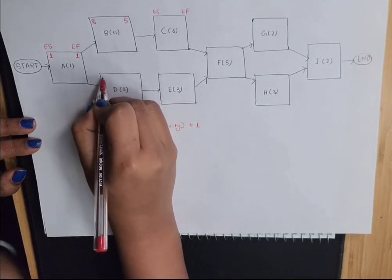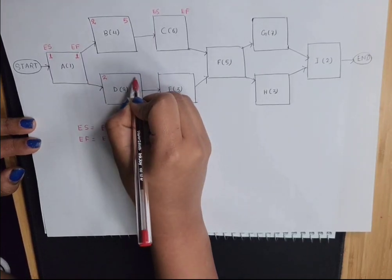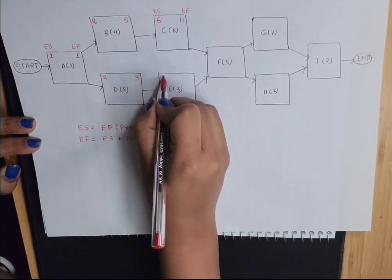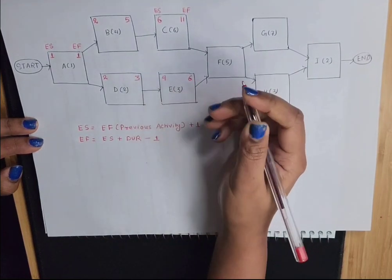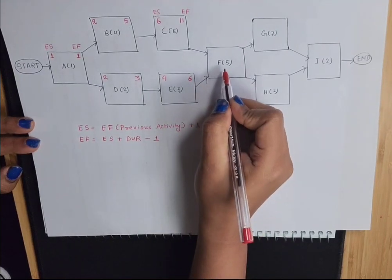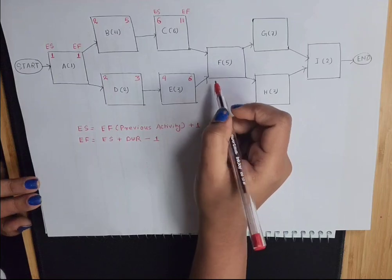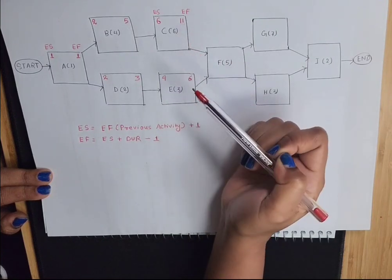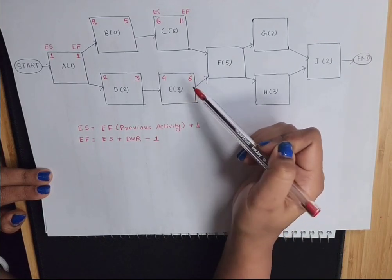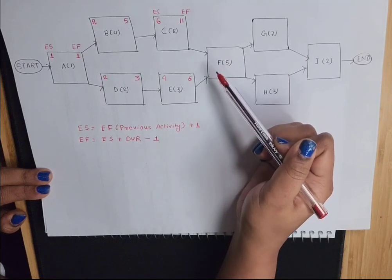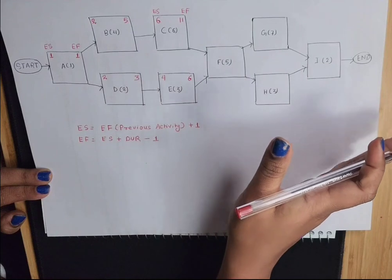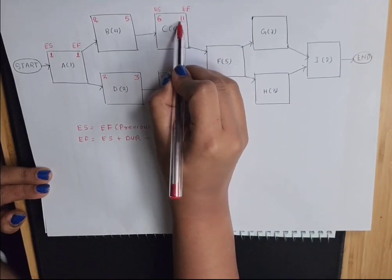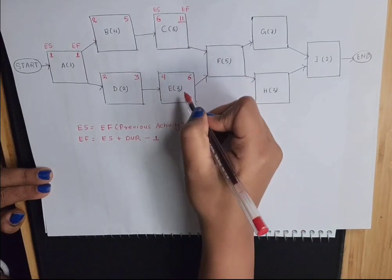For activity D, early start is 2 and early finish is 3. Further along: early start 6, early finish 11; early start 4, early finish 6. Now you have to be very careful when calculating early start and early finish for activity F. Activity F is connected to activity C and activity E. Activity C finishes on day 11 and activity E finishes on day 6. During the forward pass, you always take the larger number — here 11 is greater, so we take 11 and discard 6.